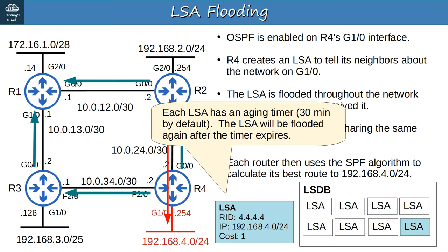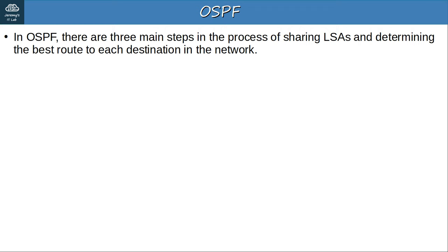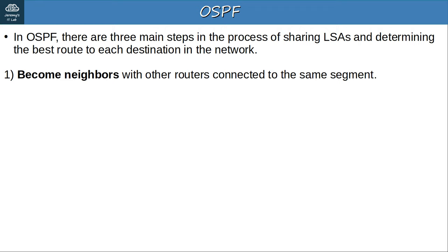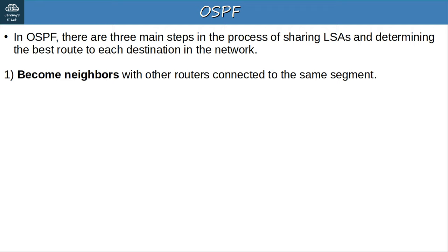Let me summarize the process. In OSPF there are three main steps in sharing LSAs and determining the best route to each destination. Step 1 is to become neighbors with other routers connected to the same segment. Step 2 is to exchange LSAs with neighbor routers. Then in step 3, each router independently calculates its best routes to each destination and inserts them into the routing table. I will cover these steps in depth in the next lecture.